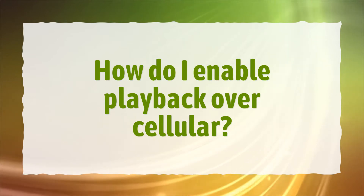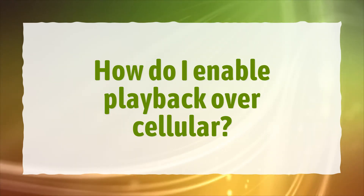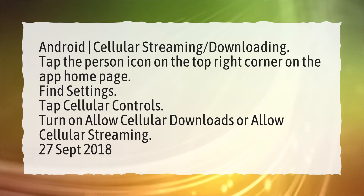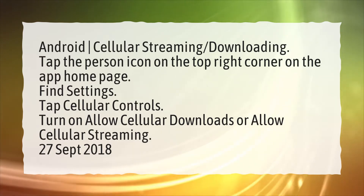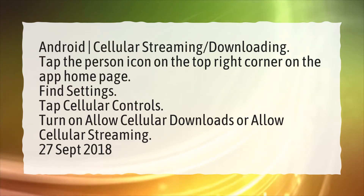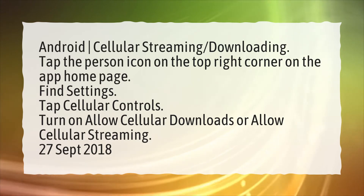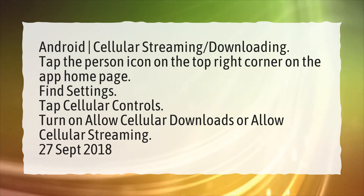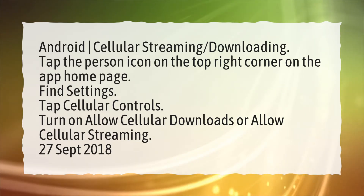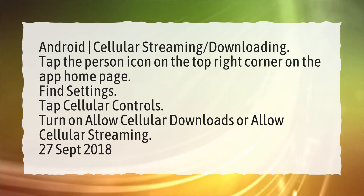How do I enable playback over cellular? On Android, for cellular streaming and downloading, tap the person icon on the top right corner on the app homepage. Find Settings. Tap cellular controls. Turn on allow cellular downloads or allow cellular streaming.